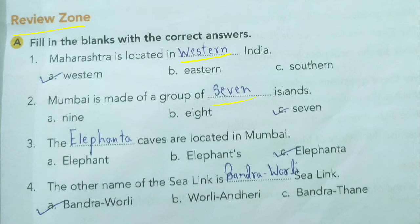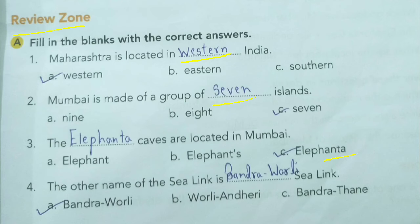Fourth: The other name of the Sea Link is blank. The Sea Link is in Mumbai. Options: A. Bandra Worli Sea Link, B. Worli Andheri Sea Link, C. Bandra Thane Sea Link. The answer is Bandra Worli Sea Link.